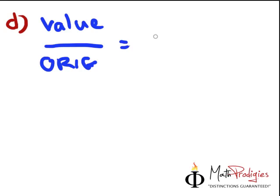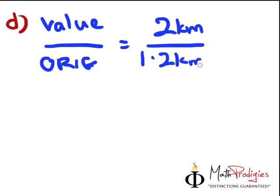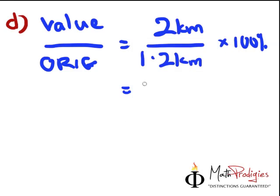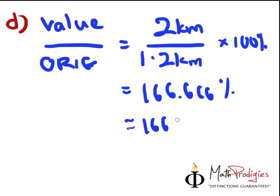So in this case, they already given you, it's actually 2 kilometers is the value, and your original is 1.2 kilometers. Then we multiply it by 100%. So 2 divided by 1.2 will give you the answer of 1.6666 times 100%, you get 166.67 percent, and your answer will be 166.7%, and that is the answer for part D.